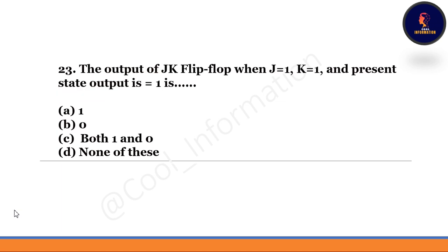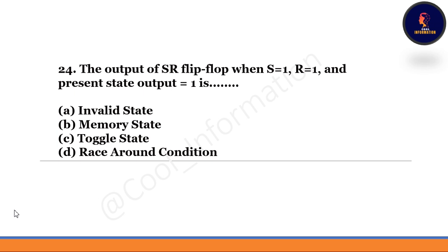Next question: The output of a JK flip-flop when J=1, K=1, and present state output is 1 — option C is correct, but 1 and 0 can be there. Next question: The output of an SR flip-flop when S=1, R=1, and present state output is 1 — option A is correct — invalid state.